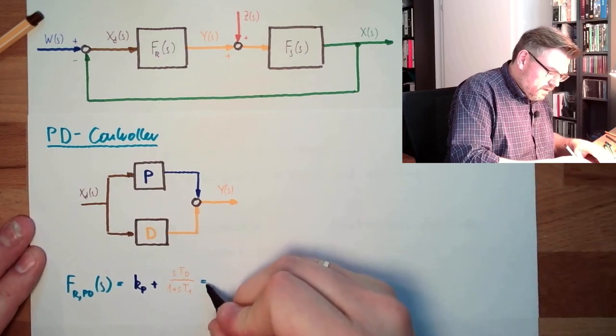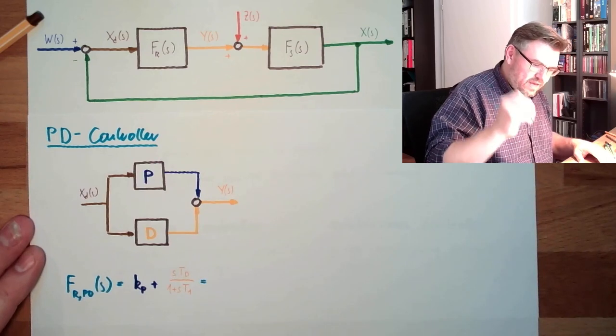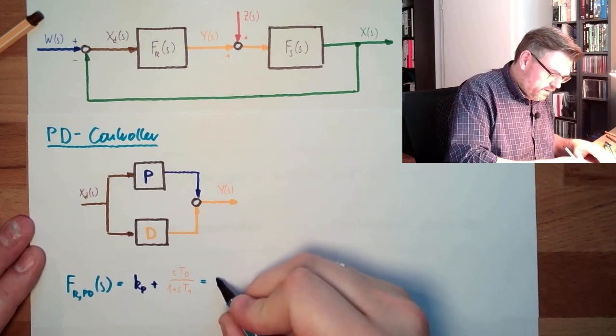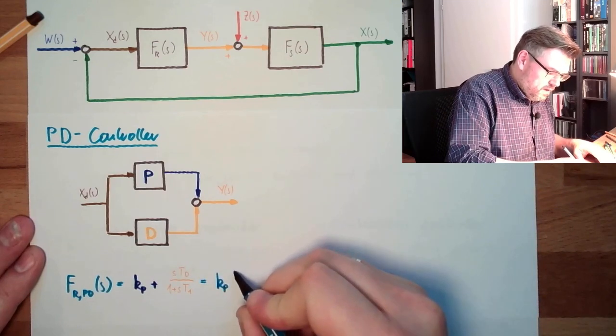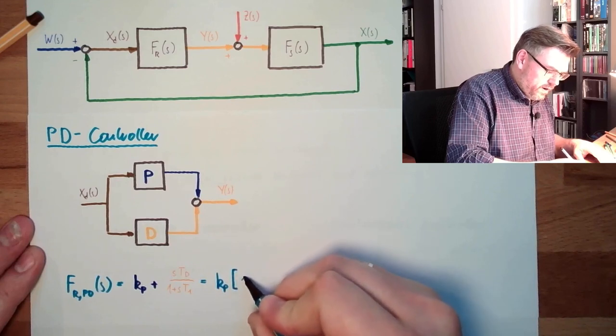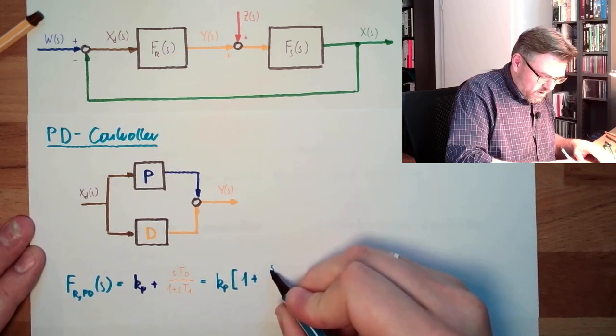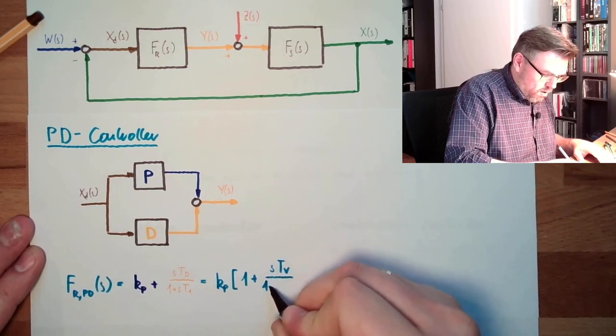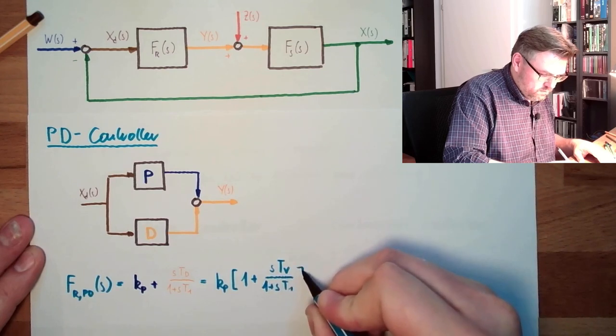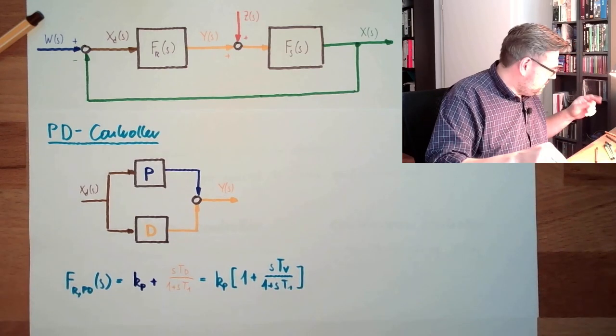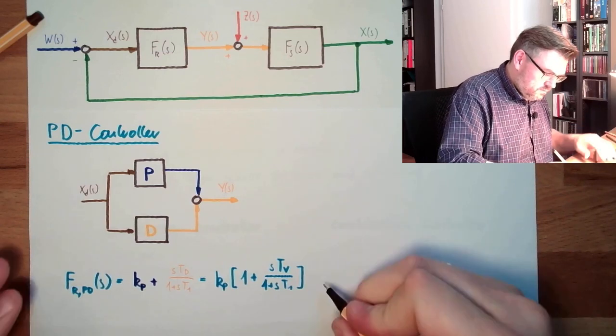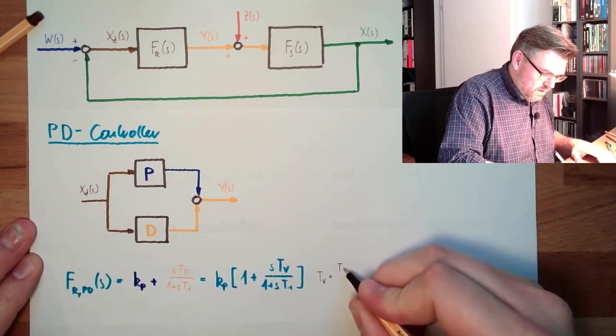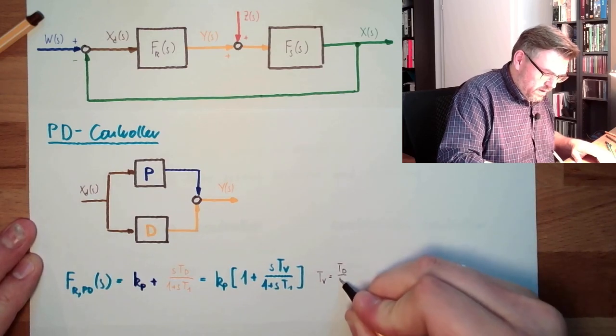And we are using the same trick, like in the PI controller, we will factor out KP. So we have this KP, then we have big bracket, one plus, and now it's STV divided by one plus ST1. And this TV equals TD divided by KP, of course. Because if we bring this back in, we must have TD.